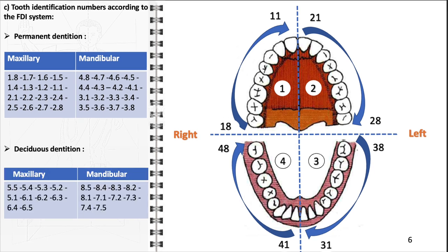For deciduous or baby teeth, the World Dental Federation numbering system modifies the first digit to denote quadrants five through eight. Quadrant five represents the maxillary right, six the maxillary left, seven the mandibular left, and eight the mandibular right. The teeth within these quadrants are numbered 51–55, 61–65, 71–75, and 81–85, reflecting the fewer number of teeth in the deciduous dentition.